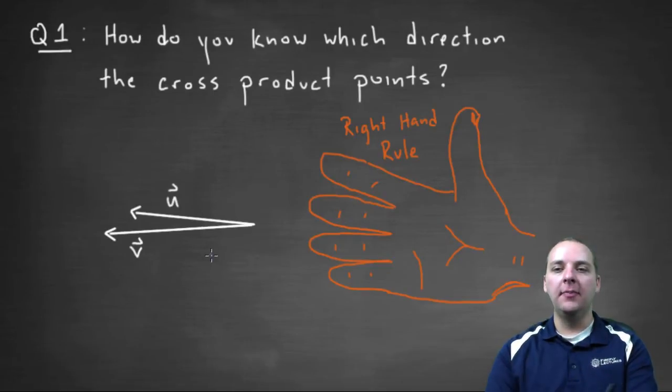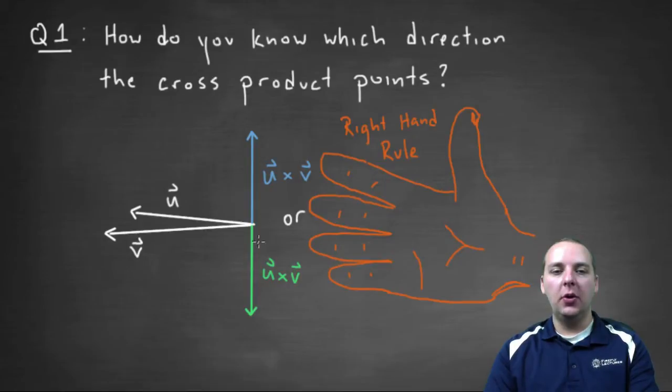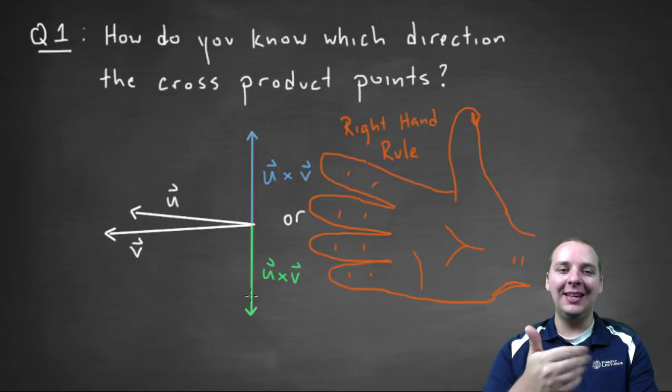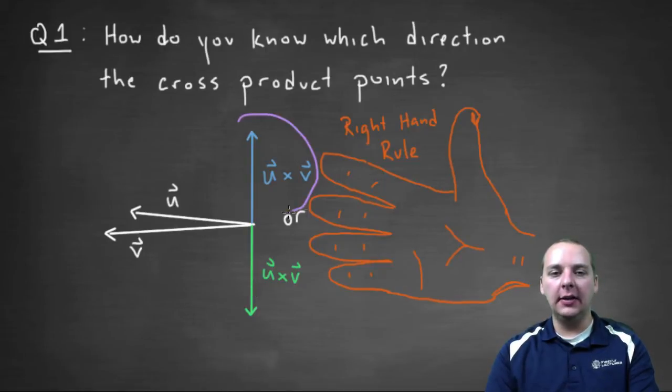So for here, u cross v, is it going to be the vector that points upwards, or downwards, if your fingers start at u and end at v? Hopefully you said this one, hopefully you said the one that pointed upwards.